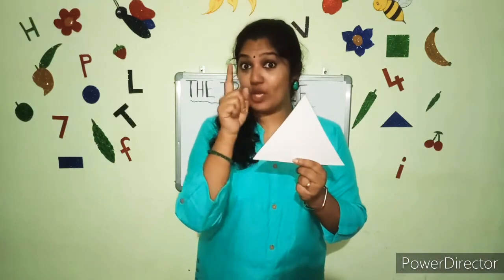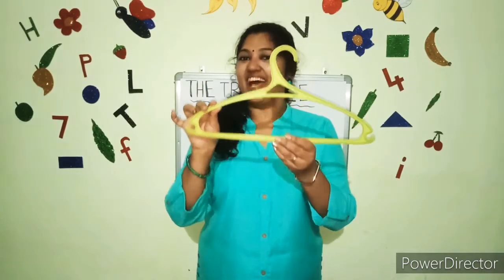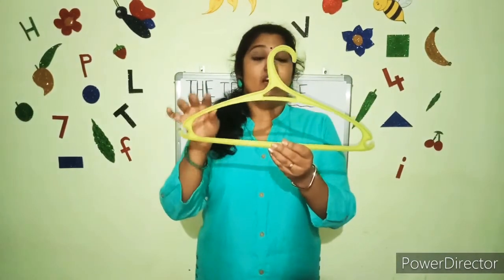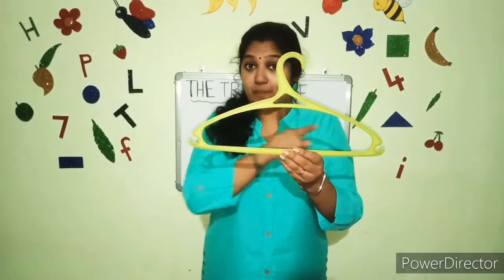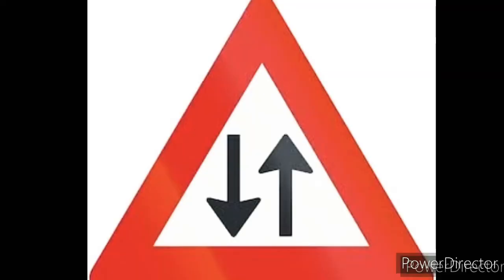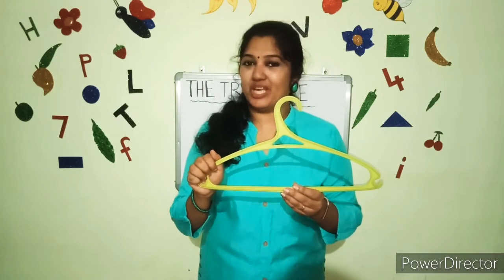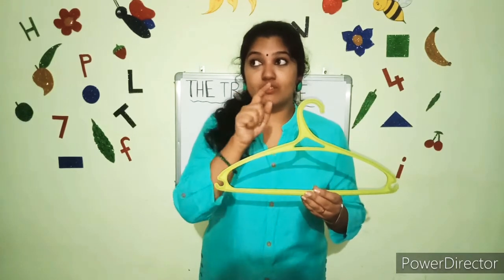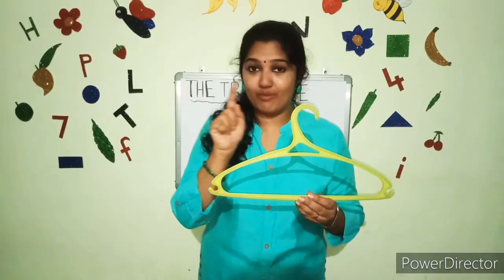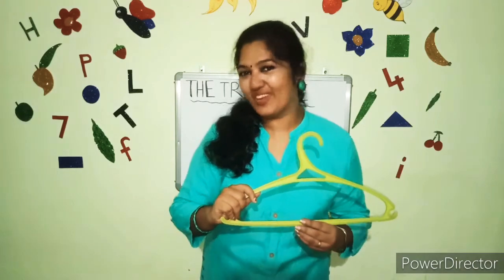I'll show you one object which is triangular. What is this? A hanger, right? And can you see the shape? It's a triangular shape. And some traffic signs are also in a triangle shape. You have to search around you — look around you and find out things which are in this triangle shape. Okay?